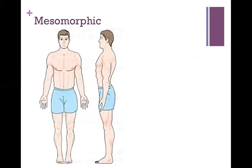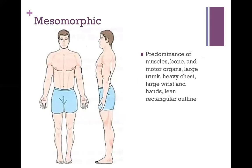The first body type Sheldon claimed was the mesomorphic body type, or the mesomorph. This body type included a predominance of muscle, bone, and motor organs — large trunk, heavy chest, large wrists and hands, and a lean rectangular outline. According to Sheldon, this person was very active, assertive, aggressive, and unrestrained — so a very impulsive type of person.